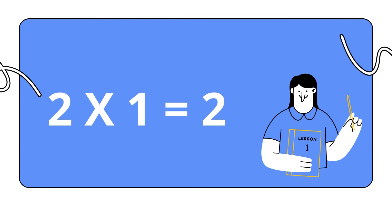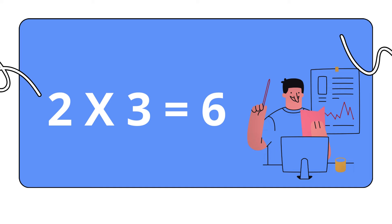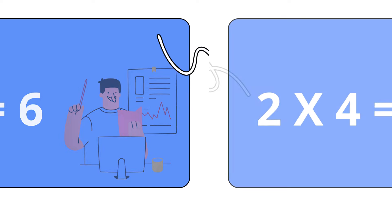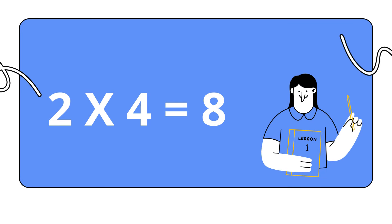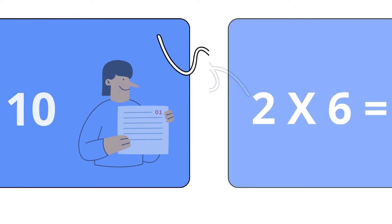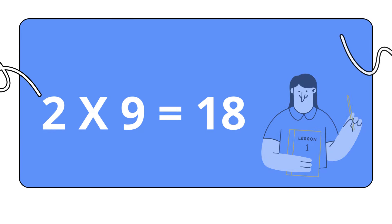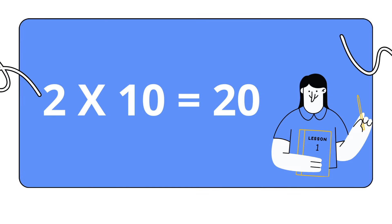2 1s are 2. 2 2s are 4. 2 3s are 6. 2 4s are 8. 2 5s are 10. 2 6s are 12. 2 7s are 14. 2 8s are 16. 2 9s are 18. 2 10s are 20.